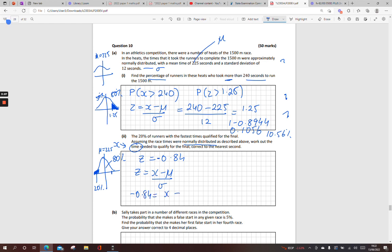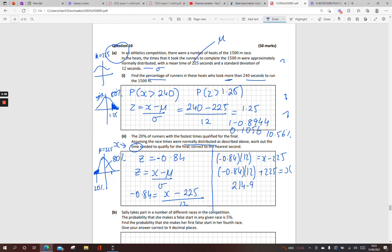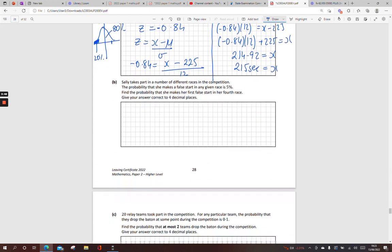Throw that then into my formula. I'm working out my X. It's still the same mean and still the same standard deviation because it's given them part A of the question. Cross multiply there. And then just work that out. Bring it across maybe your 225. And you get 214.92. It says to the near second, 215 seconds. And it looks right because it's less than 225 and it's not crazy.